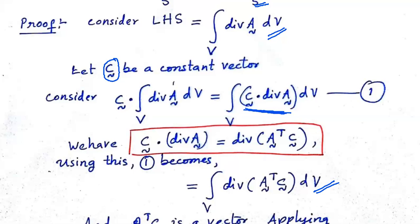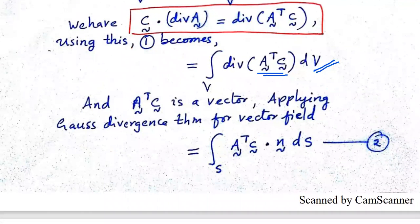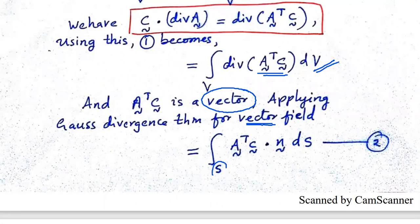Now, A is a second order tensor, so A transpose is also a second order tensor, and A transpose C is a first order tensor — that means it is a vector. So we have the divergence of a vector inside the volume integral. Since A transpose C is a vector, we can apply the Gauss Divergence Theorem for a vector field, giving us the surface integral of A transpose C dot N dS. Let us call that equation 2.